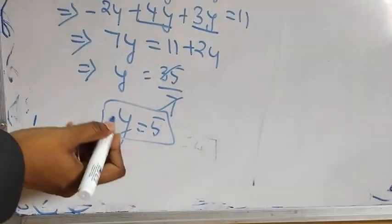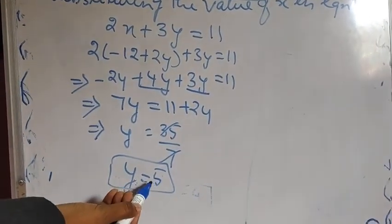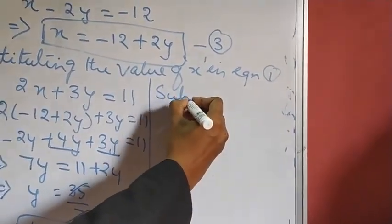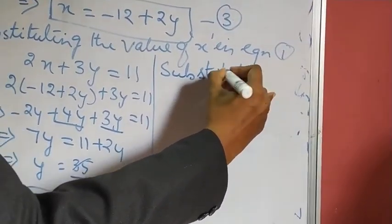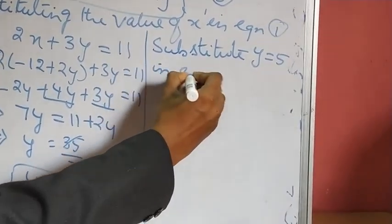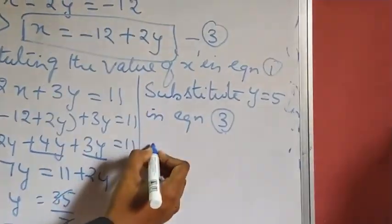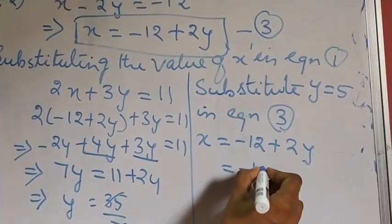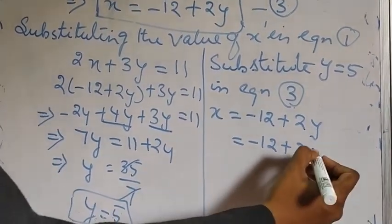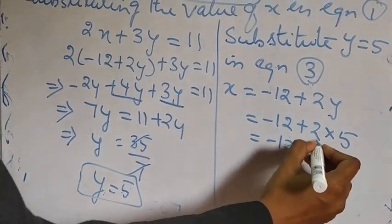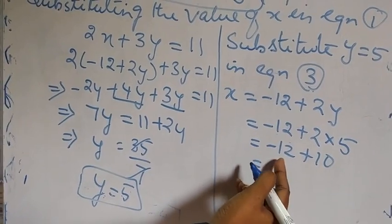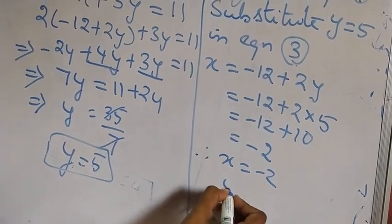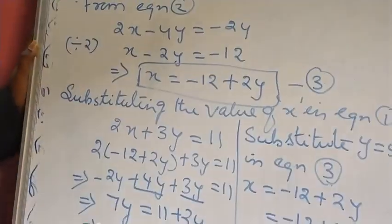Now substitute Y equals 5 into equation 3: X equals minus 12 plus 2Y equals minus 12 plus 2 times 5 equals minus 12 plus 10 equals minus 2. Therefore X equals minus 2 and Y equals 5.